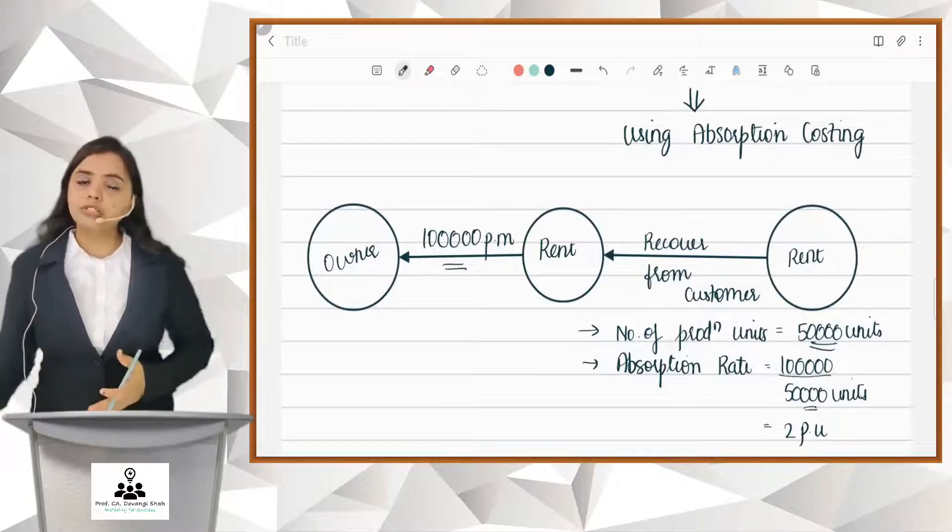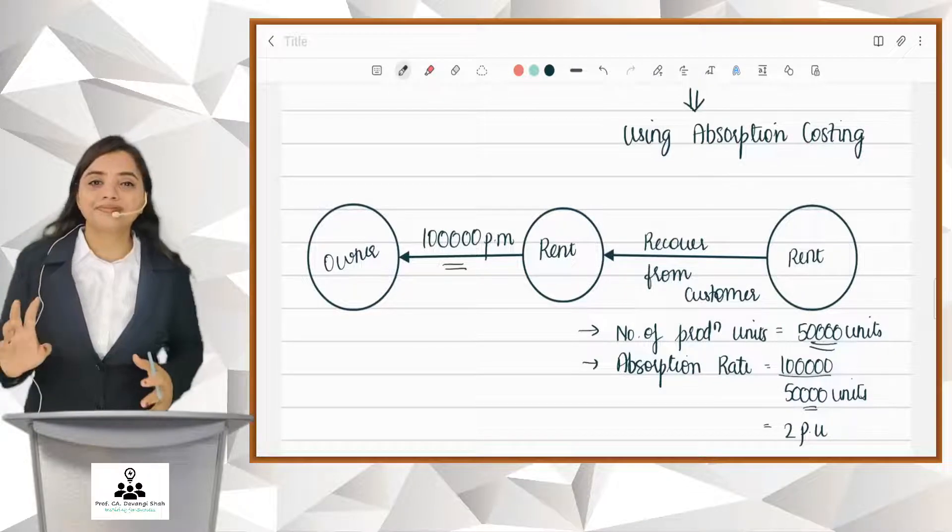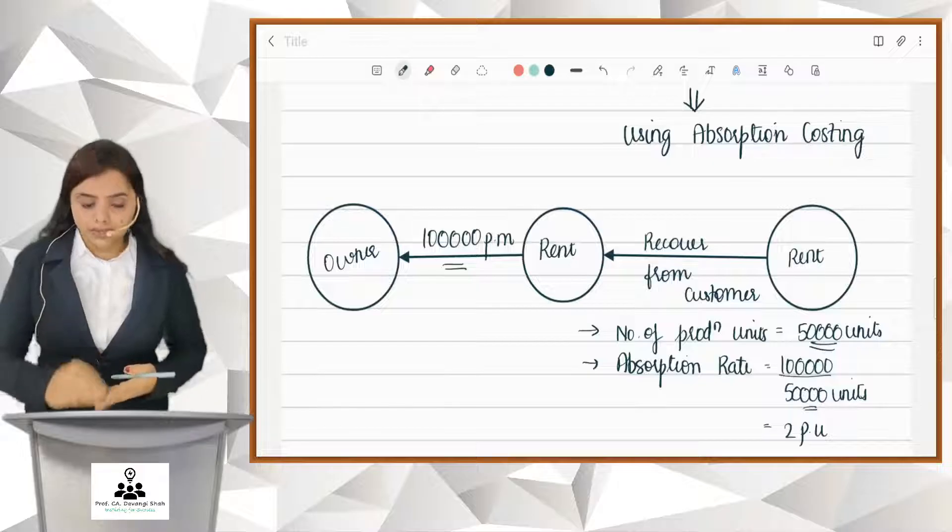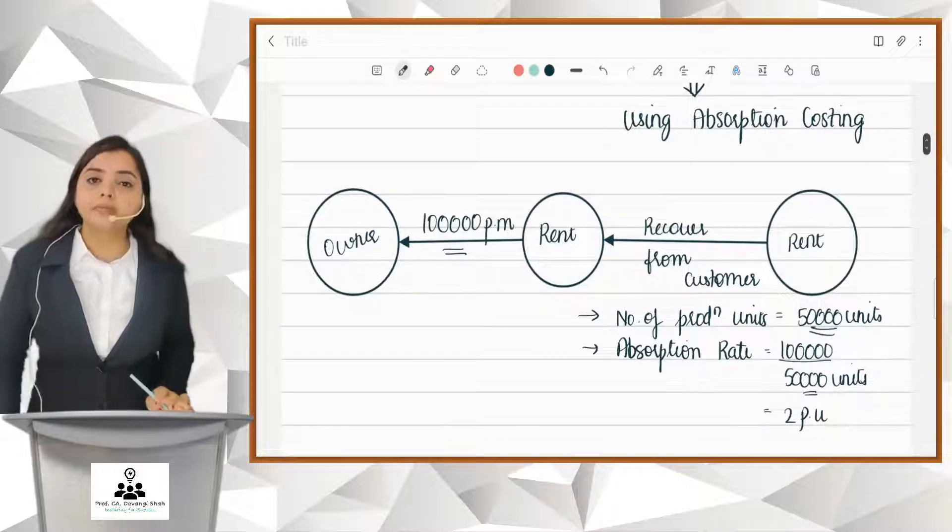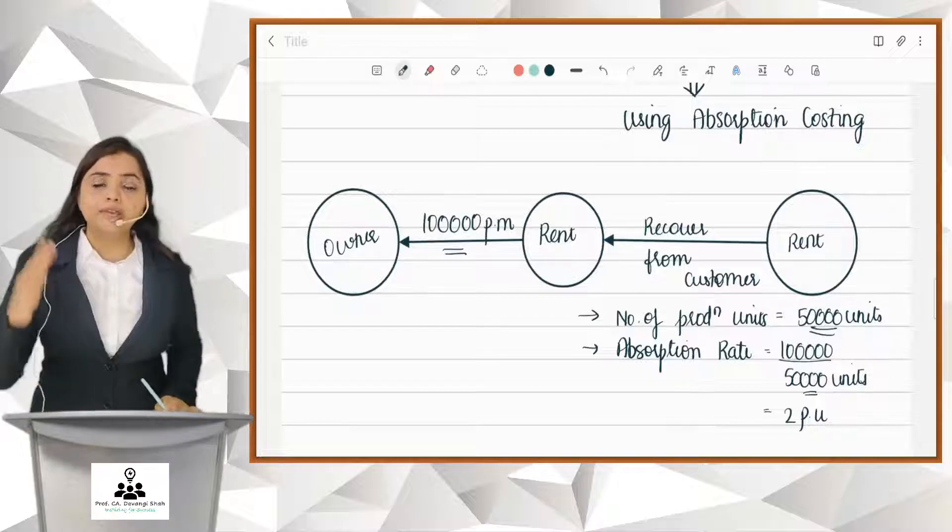Okay, so 1 lakh is the cost, 50,000 units are to be produced, so from every customer I will be charging rupees 2. And friends, this two rupees is nothing but absorption. This is the overhead we are going to recover - two rupees from every unit.